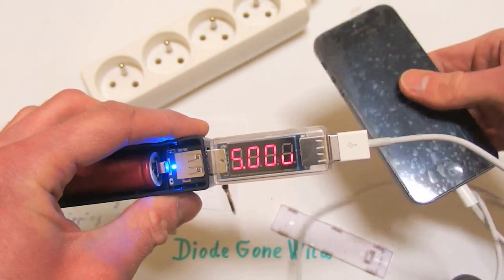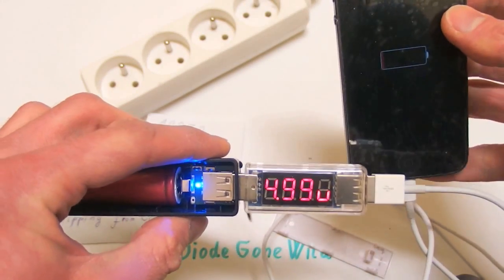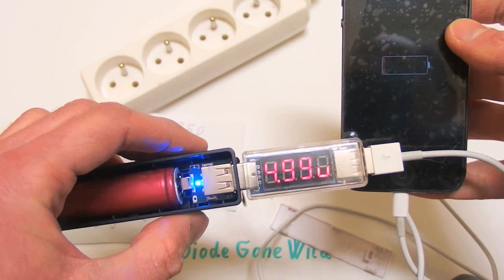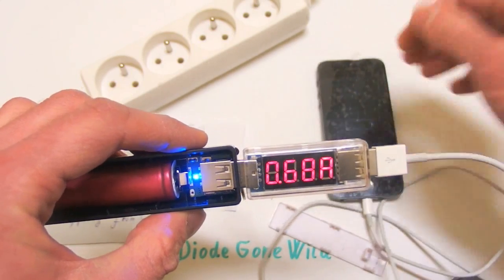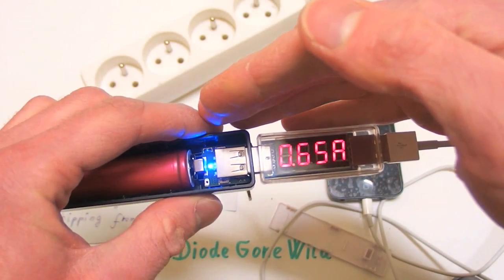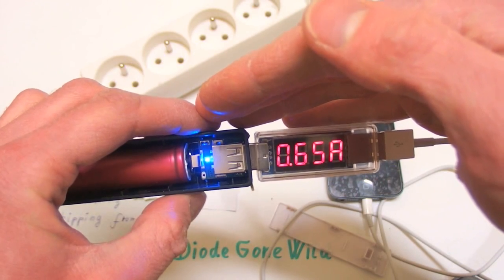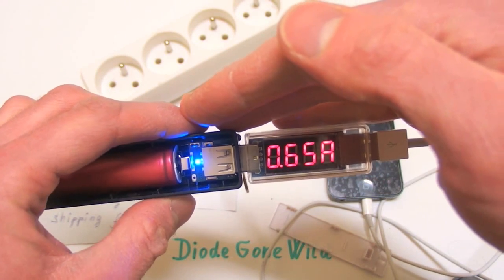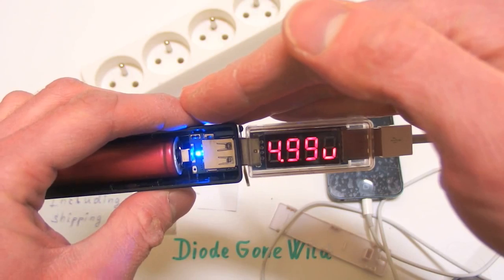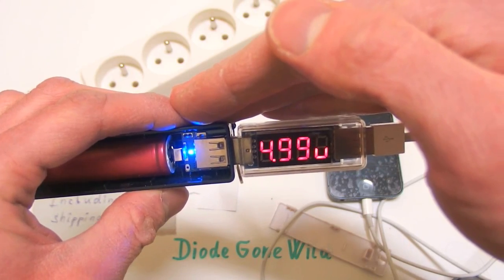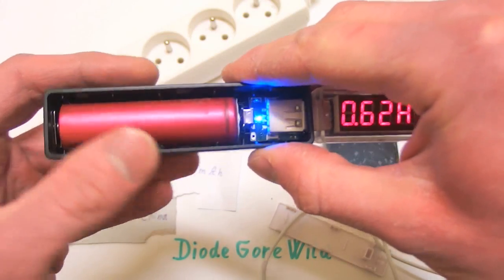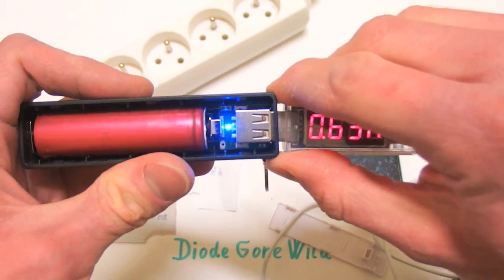My rubbish iPhone. It's charging now. The current is 0.65 amps. And the voltage is 4.99. And there is a blue LED indicating it's operating.